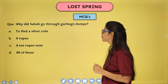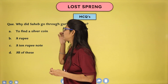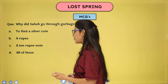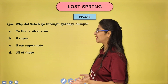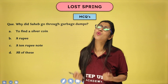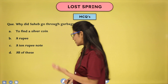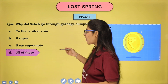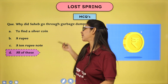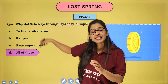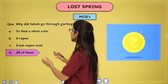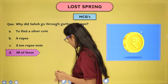Why did Sahib go through garbage dumps? Options: to find a silver coin, a rupee, a 10-rupee note, or all of these. From the garbage, they found gold — which was sometimes one rupee, sometimes two rupees, sometimes ten rupees. A silver coin wasn't literally found, but all these things were no less than silver coin or gold coin for them. So the correct answer is: all of these — all those things combined were what he searched for.